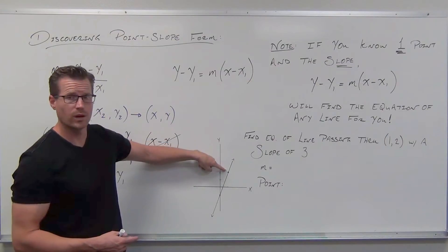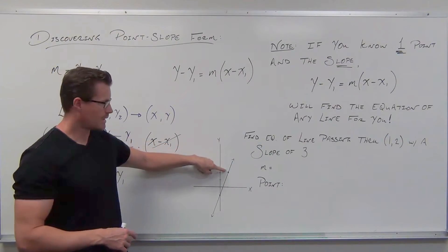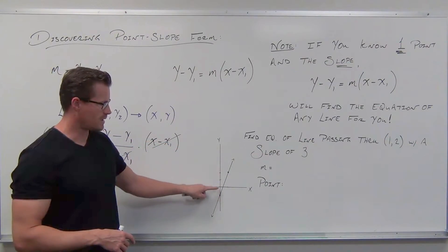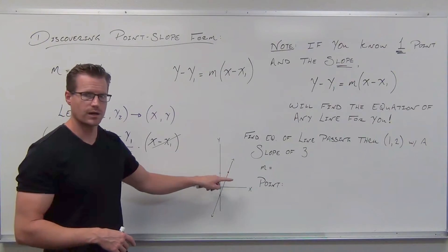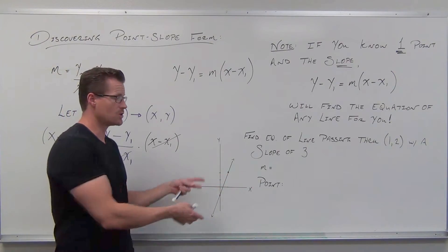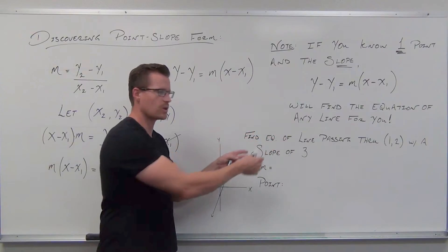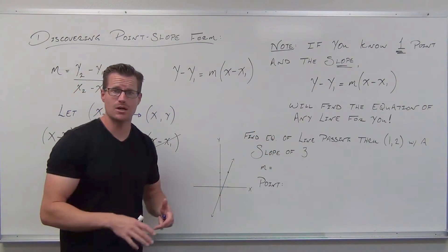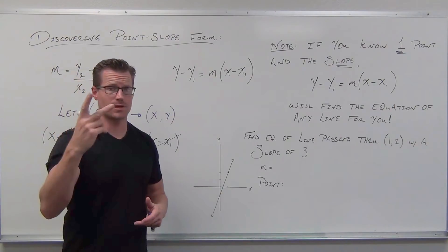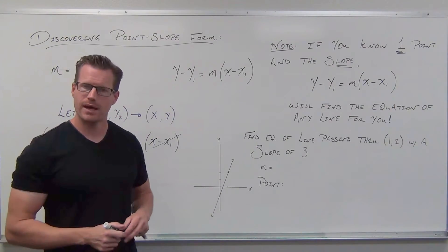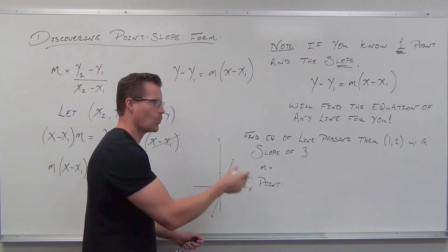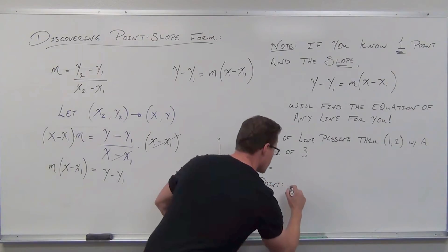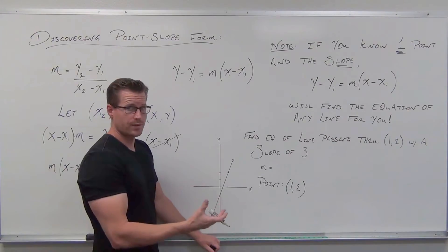Could you still find the point? Yeah, sure. That's still the point one, two. No problem. Can you still find the slope by climbing up three and over one? So either way I give it to you, whether it's graphically or verbally, you can find the same information. The only thing you need to know is one point and the slope. I want you to write out what the point is.